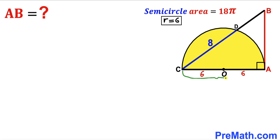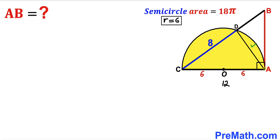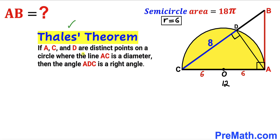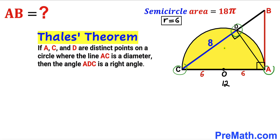So the whole length AC is going to be 6 + 6 = 12 units. Now let me connect point A with point D. Let's recall Thales' theorem: if A, C, and D are distinct points on a circle where AC is a diameter, then angle ADC is 90 degrees. In our case, points A, C, and D are on the semicircle and AC is the diameter, so angle ADC is 90 degrees.